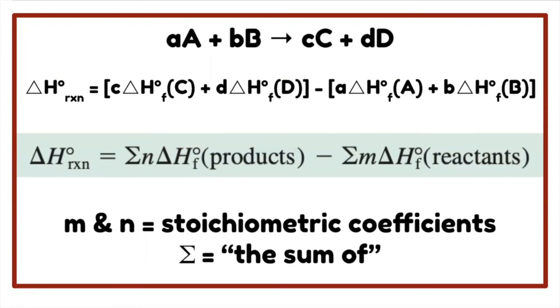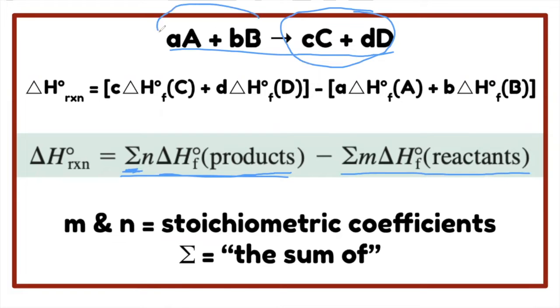Direct method of solving heats of reaction is only used for reactions that can go completely or that can occur in one step. For example, I have this equation. Direct method uses this formula: the summation of the heat of formation of the products minus the summation of the heat of formation of the reactants.